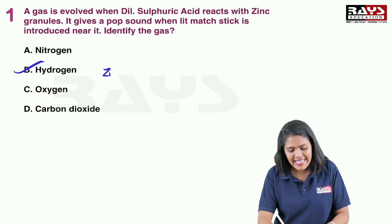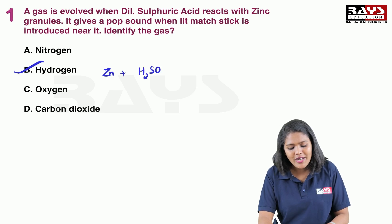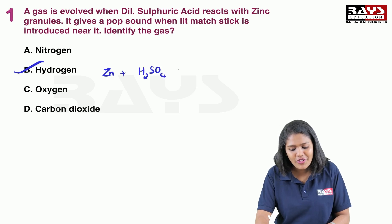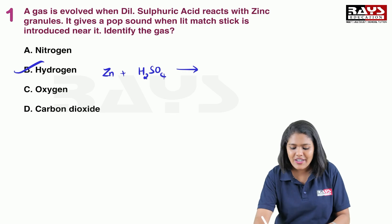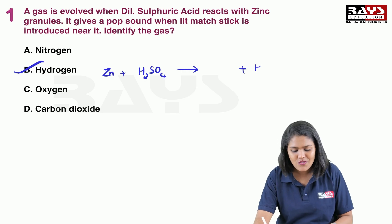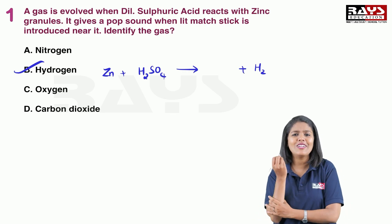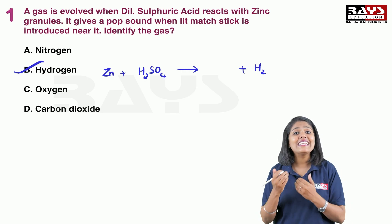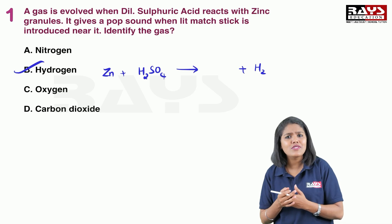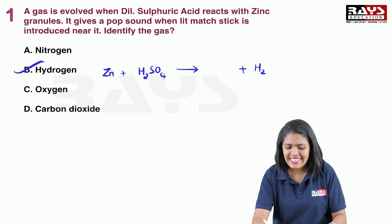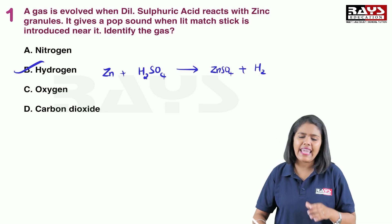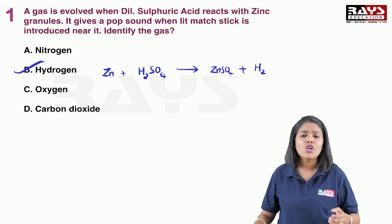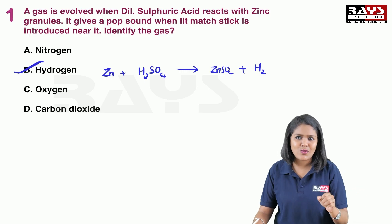Here, what is the equation? When zinc reacts with dilute sulfuric acid, we write: Zn + H₂SO₄. The products formed are metal salt and hydrogen gas. The metal salt formed here is zinc sulfate, with chemical formula ZnSO₄. While learning any MCQs, just go through all the aspects.